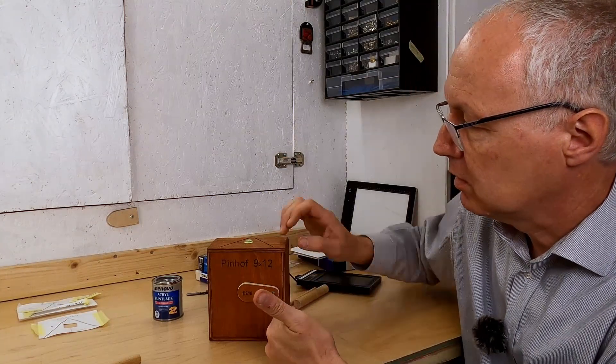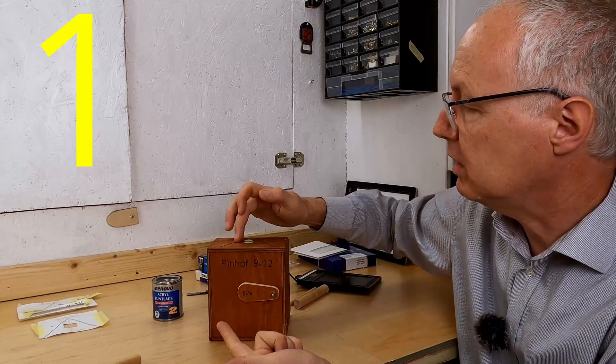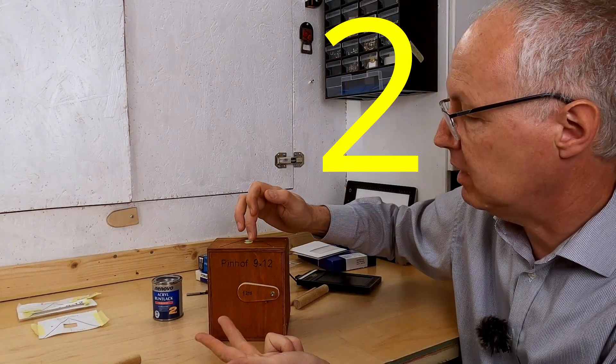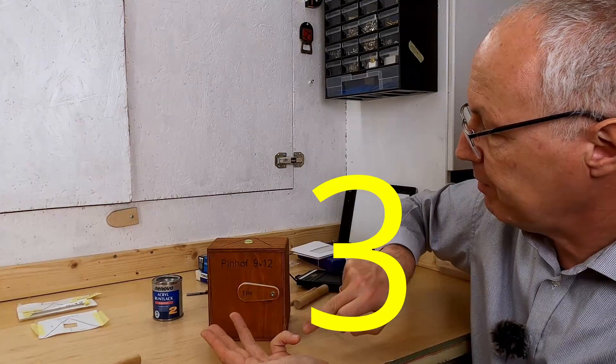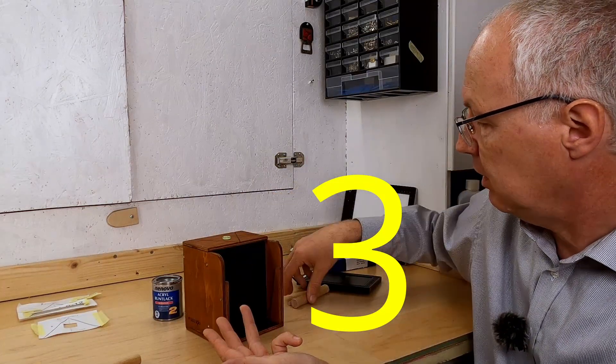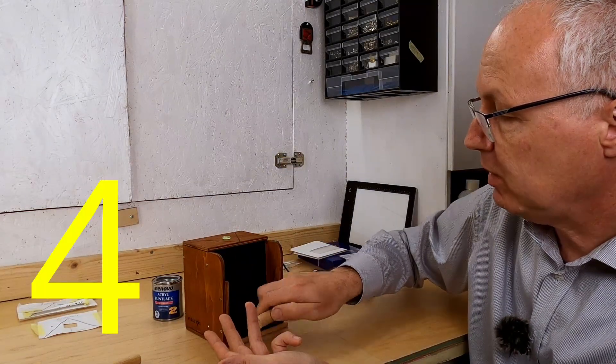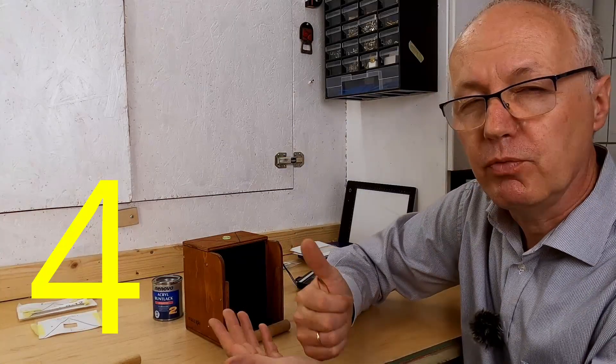So for today, we have done several optimizations. In total, if I count right, five. So we have the title, we have the lines, we have the leveler, we have the clamping, we have the attachment, and we have solved the light leak problem. So it is between five and six, as you like to count it.